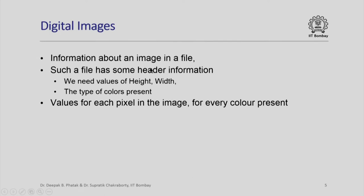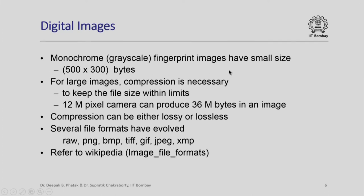The information about an image is actually stored in a file because there is a large number of pixels — you cannot put them down on a piece of paper or input or output them ordinarily. Such a file will contain some special header information, for example the height, width, types of color present, and each file will have values for each pixel depending upon whether it is a color, monochrome, or grayscale image. Fingerprint images typically are monochrome or grayscale images and have small size, around 500 × 300 bytes, but for large images we need to compress them.